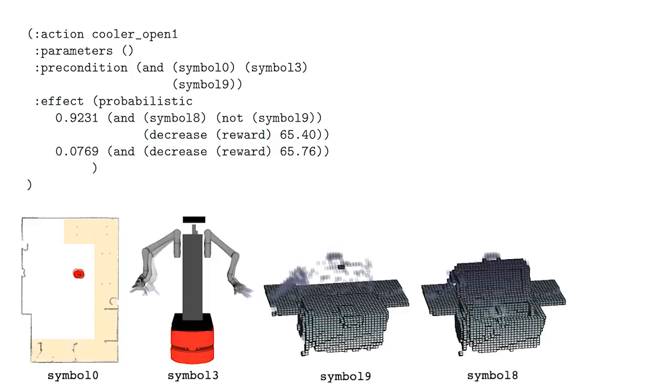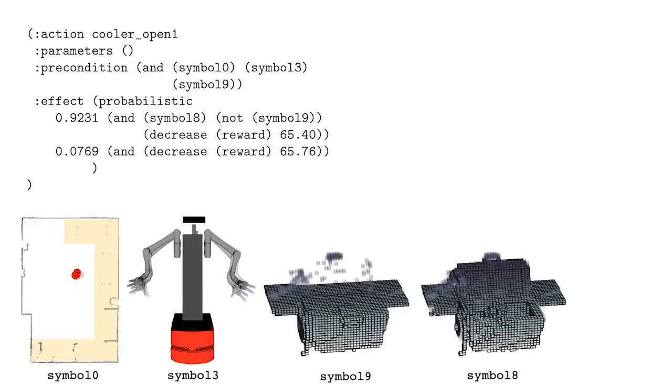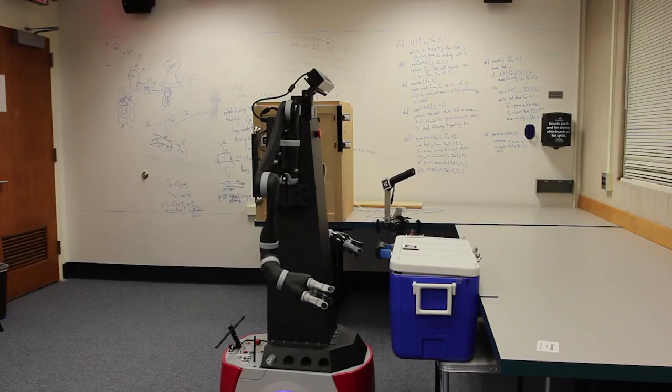Once Anna has learned a complete collection of these operators, the grounding distributions can be discarded for the purposes of planning, since the resulting abstract model, which is literally just a text file, is sufficient. To demonstrate this, we ask Anna to move the green bottle from the cooler, which is closed, to the cupboard, which is also closed. Note that the switch is on.